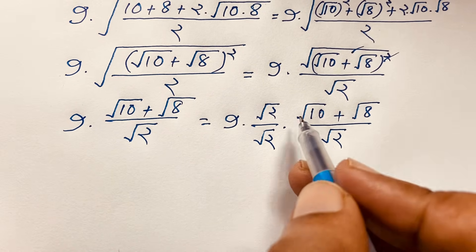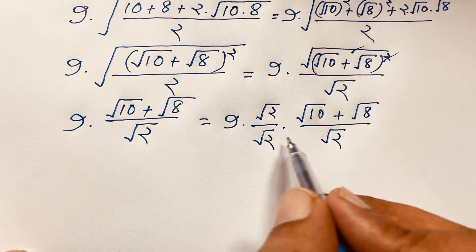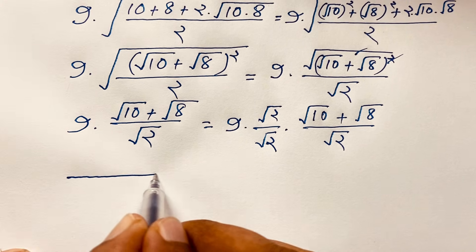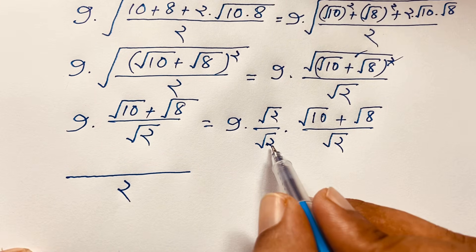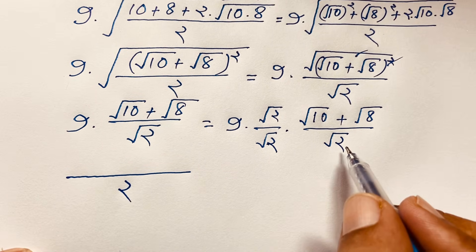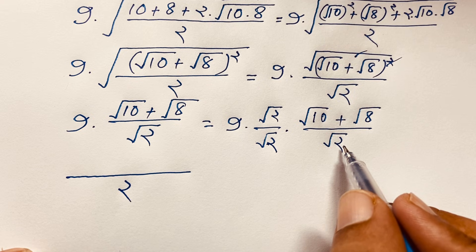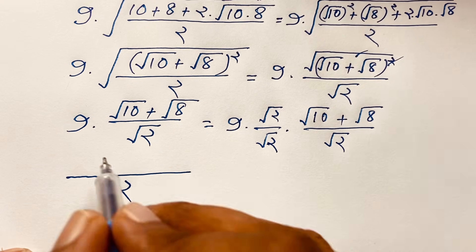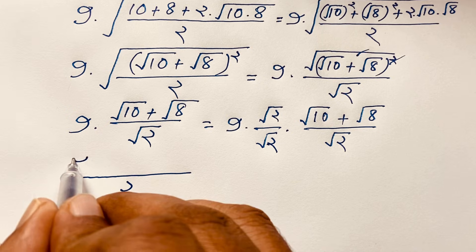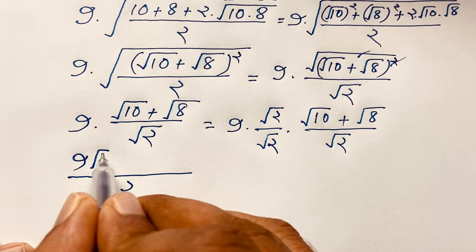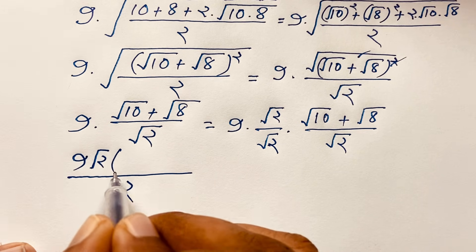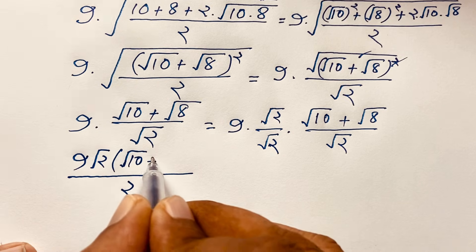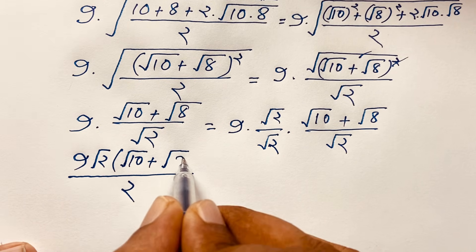Square root 2 times square root 2 equals 2. So the expression becomes 9 times square root 2 times (square root 10 plus square root 8). We note that 10 is 2 times 5, and 8 is 2 times 4.